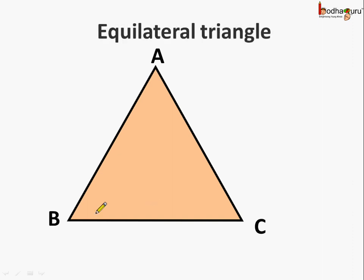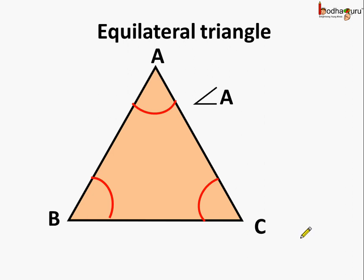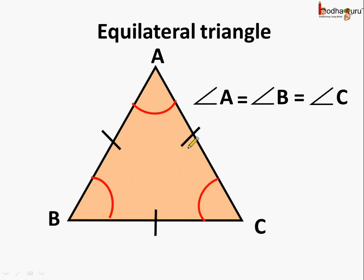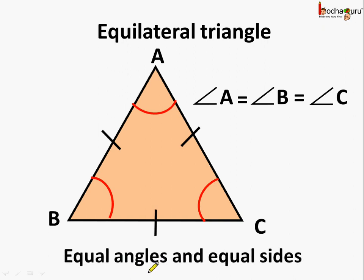What can we say? When all three angles are equal it is called an equilateral triangle or equiangular triangle, and all three angles are equal. So we can say angle A equals angle B equals angle C in triangle ABC. In an equilateral triangle, not just all three angles but all three sides are also equal.